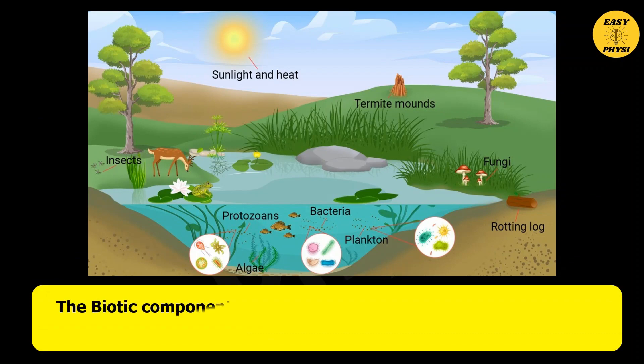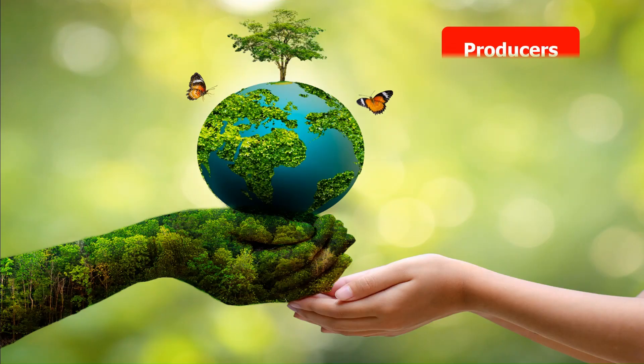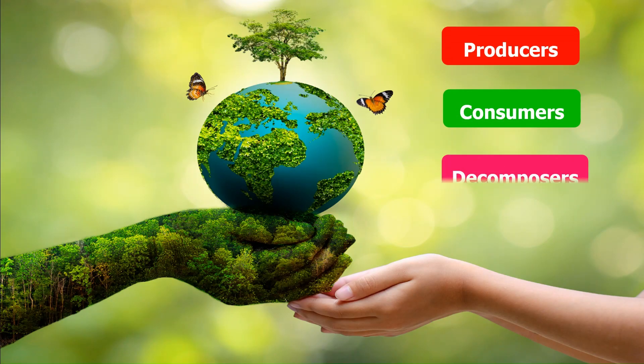The biotic components of the ecosystem are categorized into three types according to their mode of feeding. Those are: Producers, Consumers, and Decomposers.